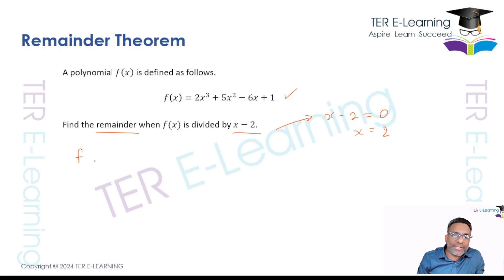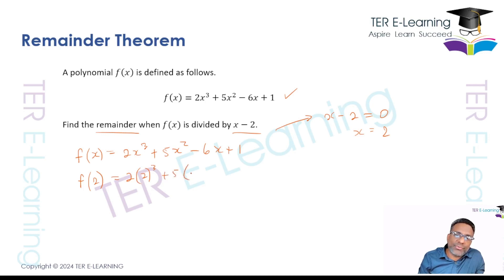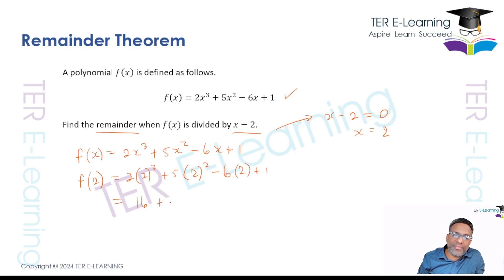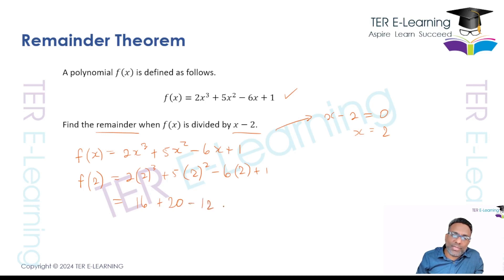So let's write out the function: f of x is equal to 2x cubed plus 5x squared minus 6x plus 1. We're going to substitute x equals 2 into this. So this is going to be 2 times 2 cubed plus 5 times 2 squared minus 6 multiplied by 2 plus 1. 2 cubed is 8, times 2 is 16. 2 squared is 4, times 5 is 20. Minus 6 times 2 is minus 12, then add 1.